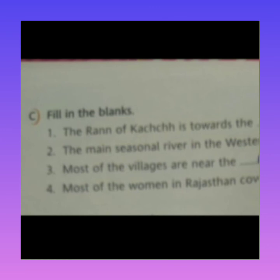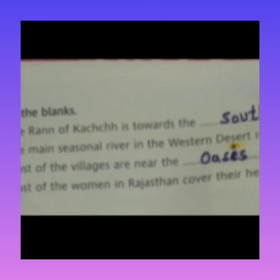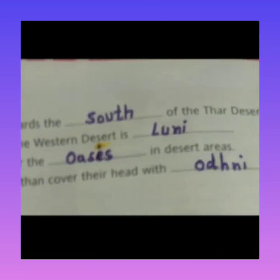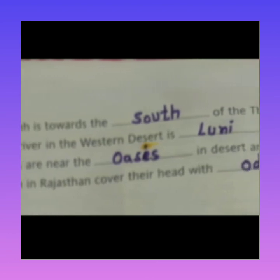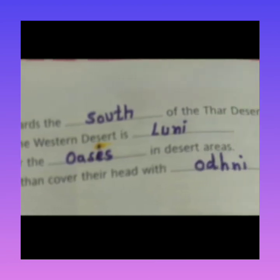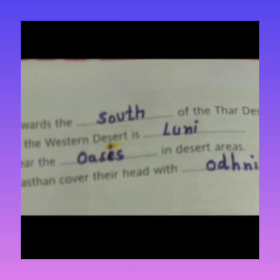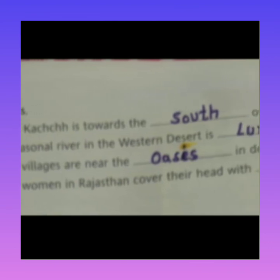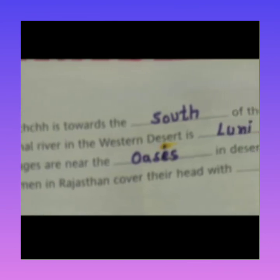Last blank: most of the women in Rajasthan cover their heads with an orni. In Rajasthan, most women use an orni to cover their heads — we also call it a dupatta. So students, you have to do this back exercise in your book and learn it. That's all for today.